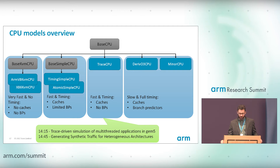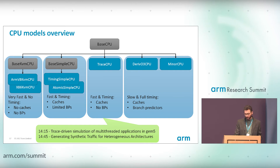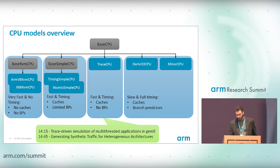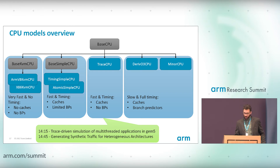Both simple CPUs are slightly slower than the KVM CPU but provide timing information and allow elaborate memory systems, with limited support for warming branch predictors. Apart from execution-driven simulation, we can also do trace-driven simulation with a TraceCPU that has roughly the same timing information as the simple CPUs, but without branch predictor support. Our more detailed CPU models are the O3 CPU — a basic out-of-order model — and the MinorCPU, which models an in-order CPU. Both are much slower but give high fidelity into application and system performance.